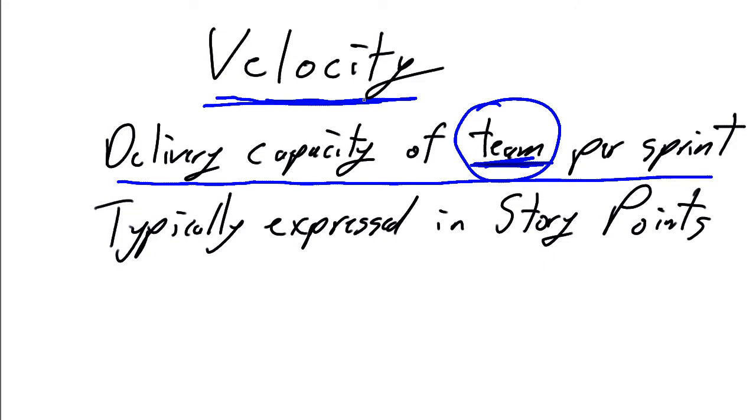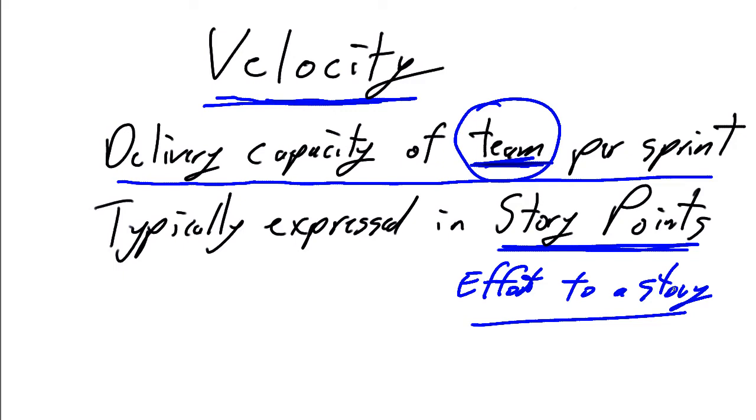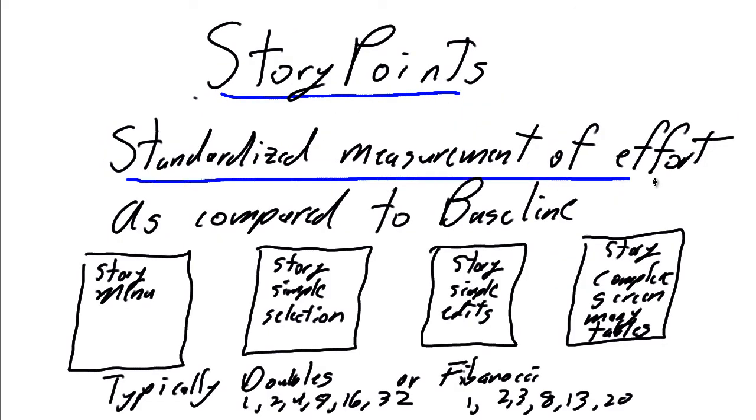How do we measure this capacity? Typically we measure the capacity in this thing called a story point. A story point is the amount of effort to complete a story. Story points, as I said, is a standardized measure of the effort for the team based on the team as compared to a baseline. There is no standard universal measure because each team in each organization is going to have its own standardized measure.